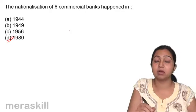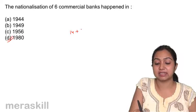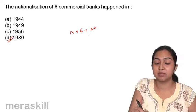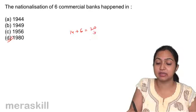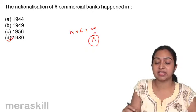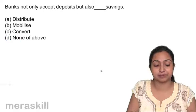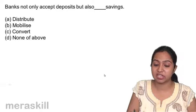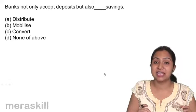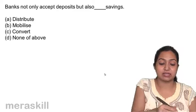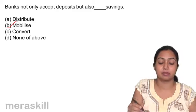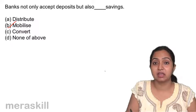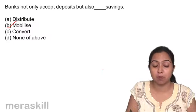You should remember 14 plus 6 equals 20 banks, but since there has been a merger of two banks, 19 banks are nationalized. Banks not only accept deposits, but also mobilize savings. Mobilized savings means they channel it in a proper direction.